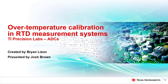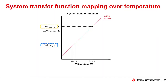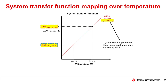To begin, let's review the system transfer function introduced in the previous Precision Labs module. Shown here is the standard system transfer function in red used extensively throughout this Precision Labs series. In the previous module, we derived a method to calibrate this transfer function and remove the initial error. While not explicitly stated, the transfer function in red is the actual response of our system at a specific ambient temperature. In this example, the red plot corresponds to the initial error at an ambient temperature of 25 degrees Celsius, which should not be confused with the temperature sensed by the RTD. The corresponding ADC codes used to map the RTD curve to the transfer function are specific to this ambient temperature as well.